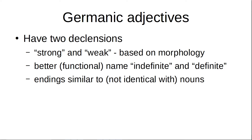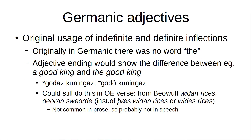The original usage of the indefinite and definite inflections — originally in Old Germanic, in the earliest stage, there was no word 'the.' There was no way to say 'the man'; you would just say 'man.' But if you had an adjective, the ending would show the difference between 'a good king' and 'the good king.' That's Godaz Kuningaz and Godo Kuningaz — I'm probably not pronouncing that right, but it's a reconstructed language anyway. So we could still write like that in poetry.